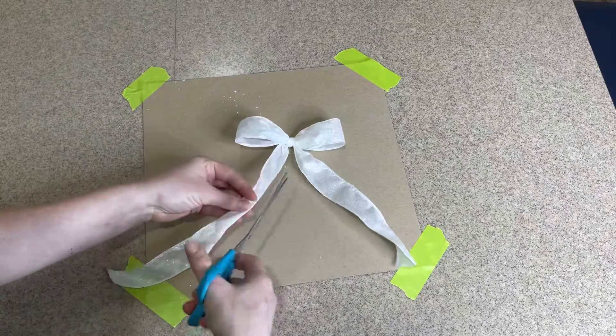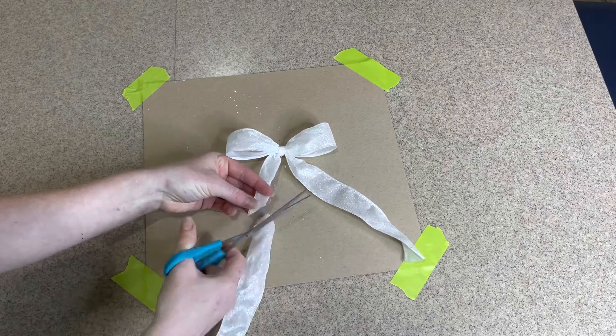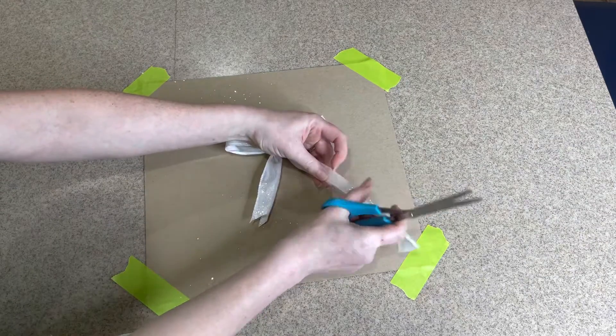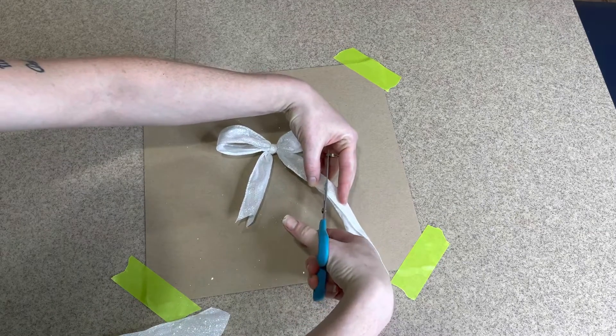You're going to take your bottom part and you're going to cut into a forked tongue by cutting at an angle, folding in half, in an upward diagonal towards the center of the ribbon.